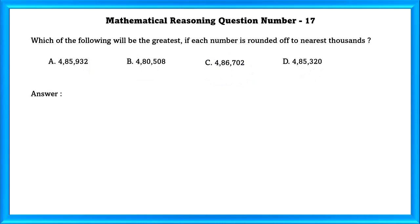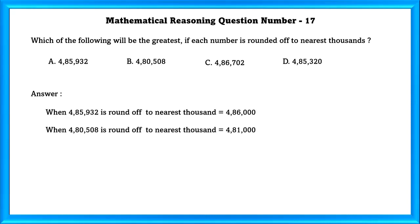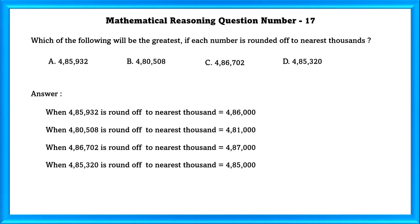Mathematical reasoning question number 17: Which of the following will be the greatest if each number is rounded off to the nearest thousands? Rounding off every number, we can see that option C is greater.